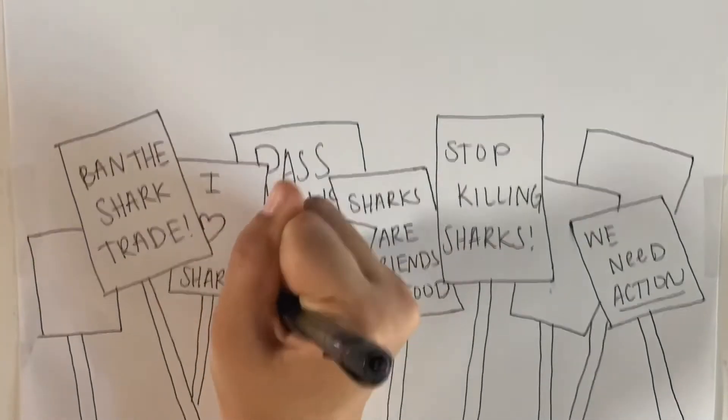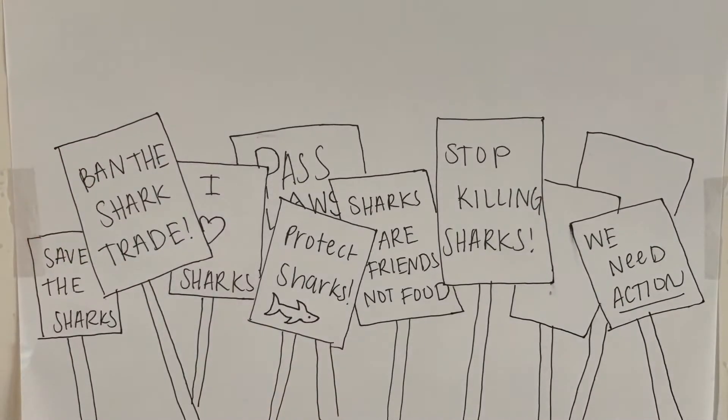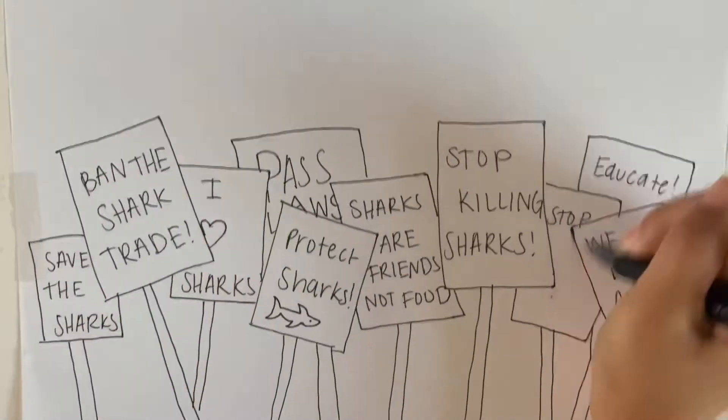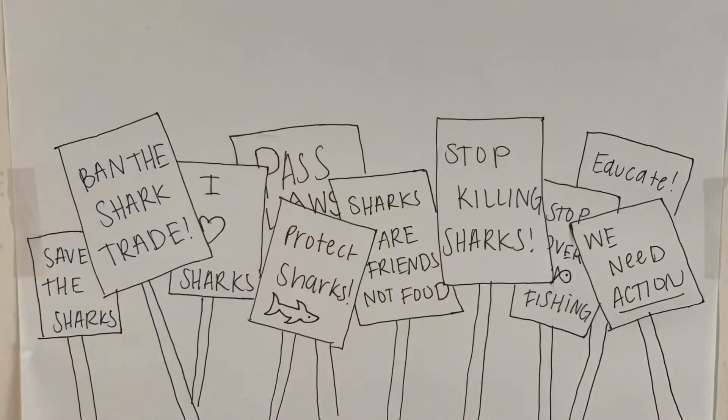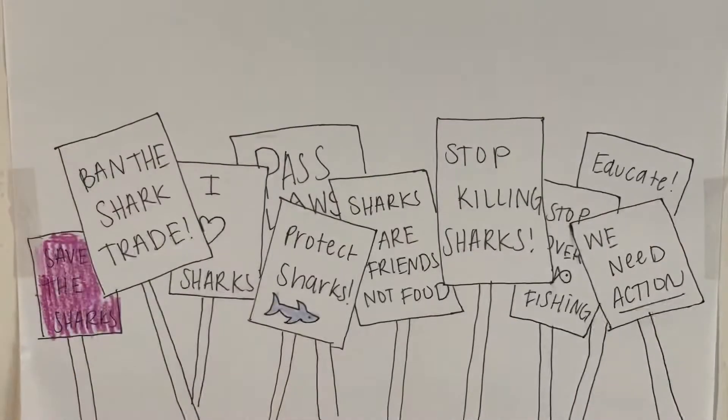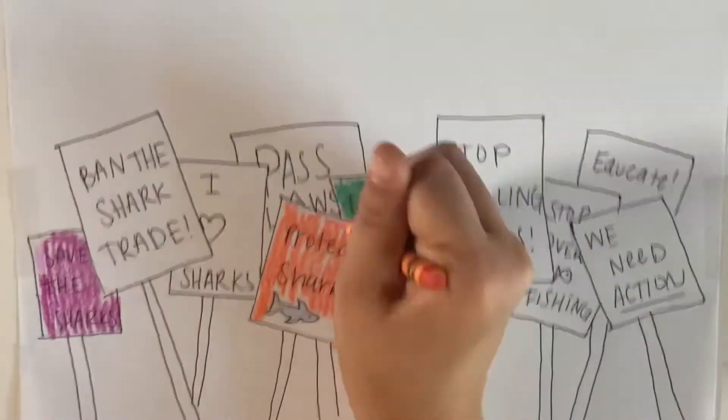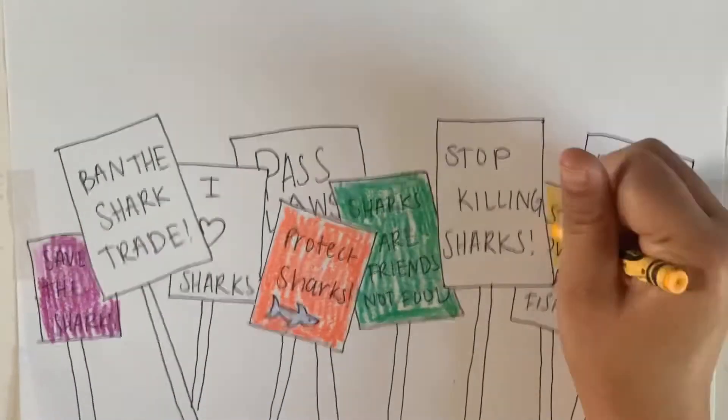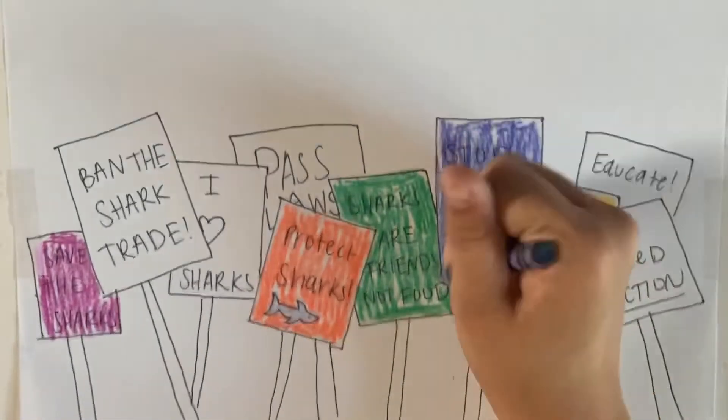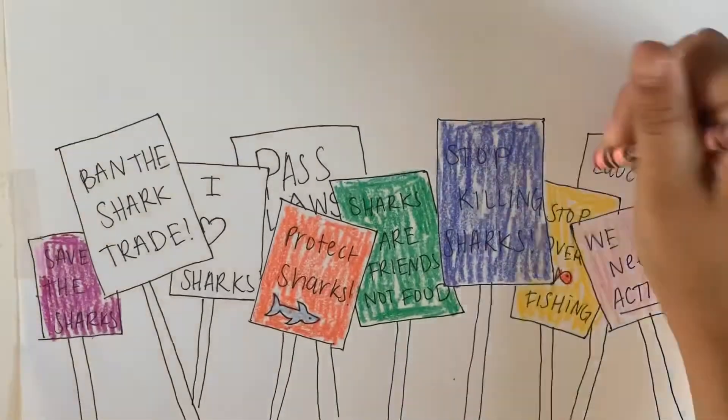Additionally, international legislation is needed to really stop this problem. If countries can come together to ban the practice of shark finning, the amount of sharks that get killed every year will dramatically decrease. While policies within certain countries can still help, if there's no international agreement, shark populations will continue to dwindle as they swim through international waters.